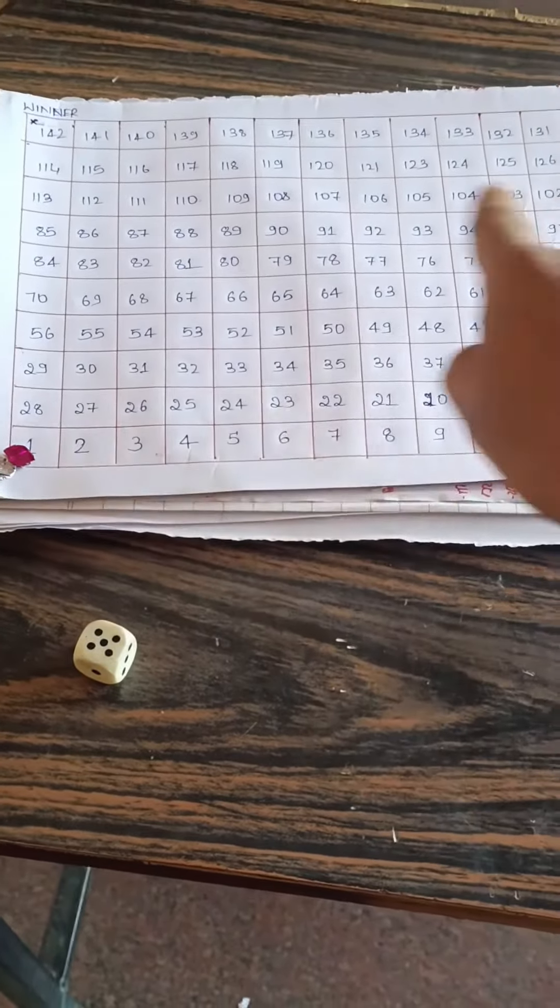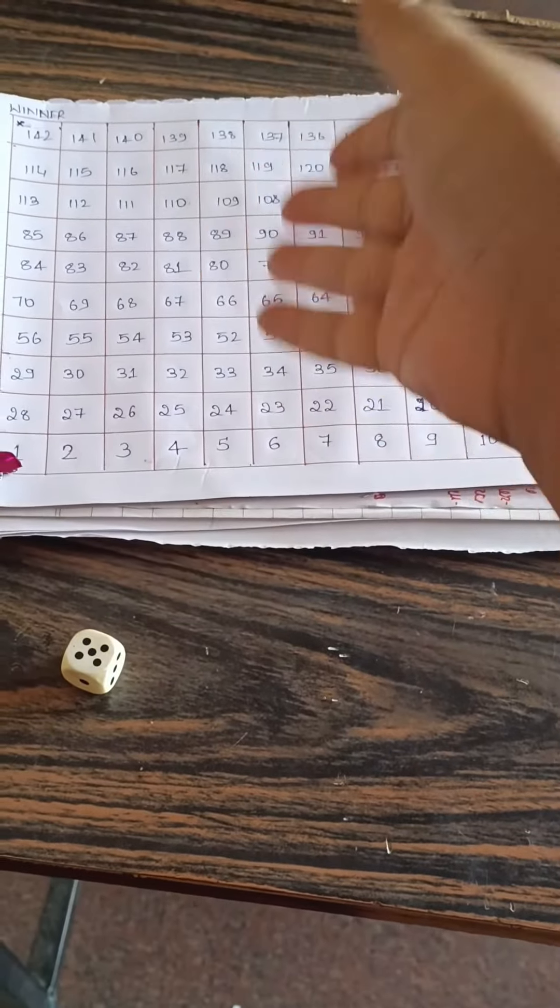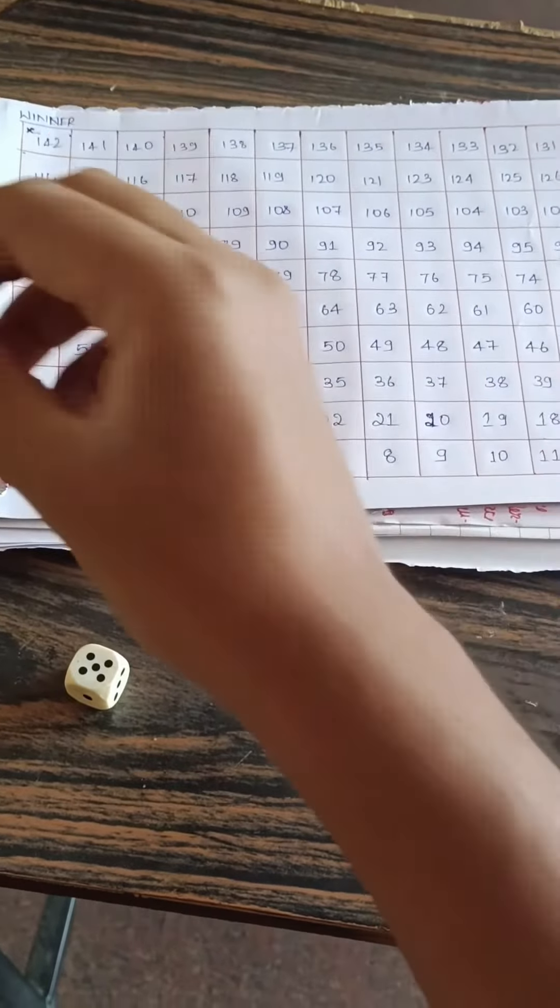You just need a paper. In the paper, you can see I have divided it into a number of columns and rows and written the numbers, and the end number is written as winner.